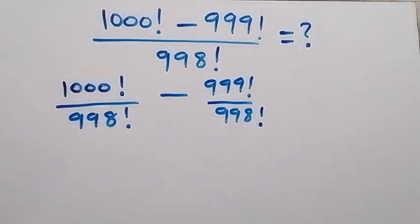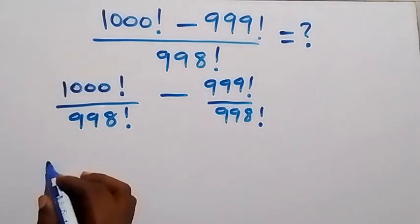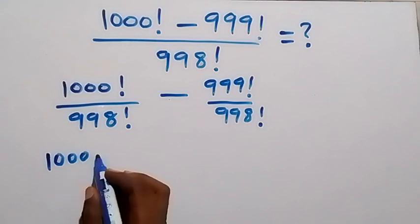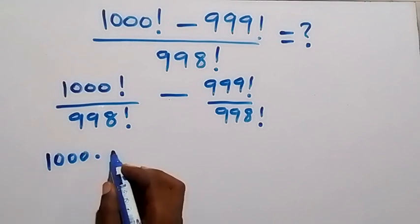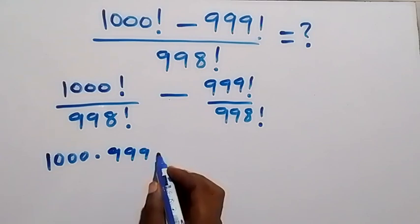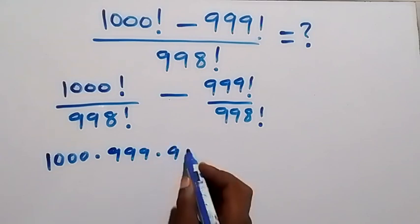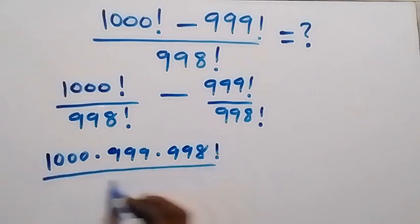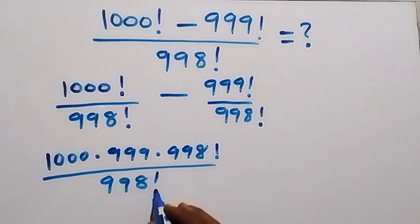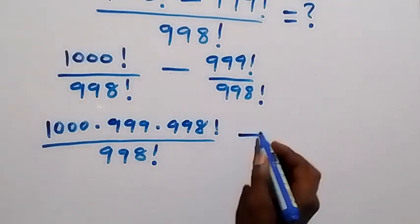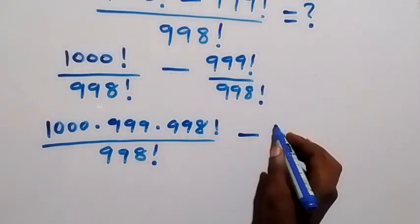Then 1000 factorial, we have 1000 multiplied by 999 multiplied by 998 factorial, then divided by 998 factorial. Then minus, same way, we can write 999 factorial as 999 multiplied by 998 factorial, then divided by 998 factorial.